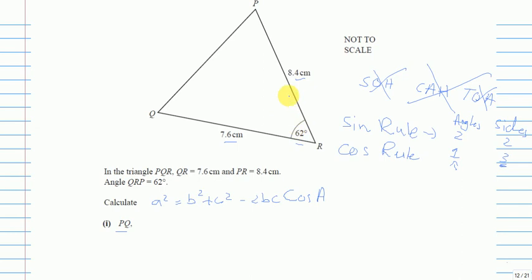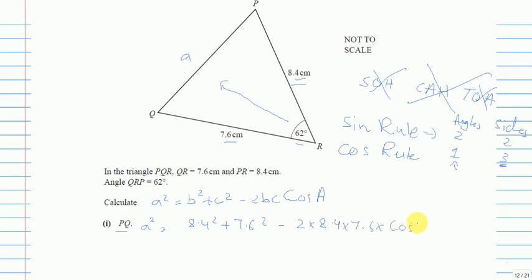Remember: the angle in cos A is the angle opposite side a, and b and c are the other two sides. Taking the square root of both sides, a equals the square root of: 8.4² + 7.6² − 2 × 8.4 × 7.6 × cos(62°).